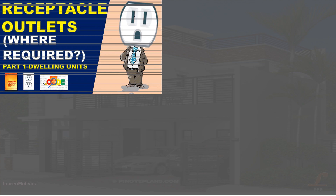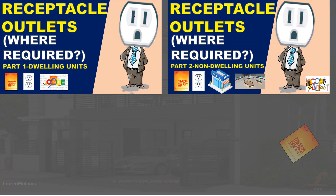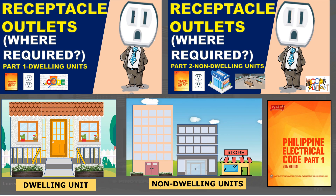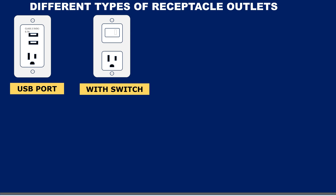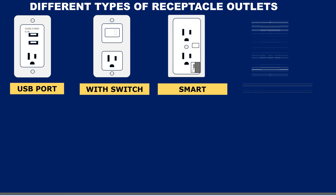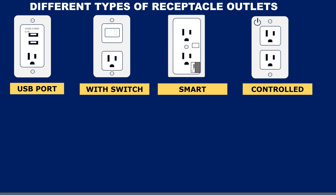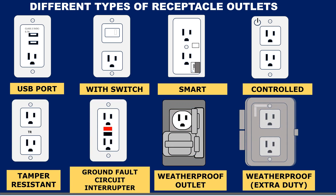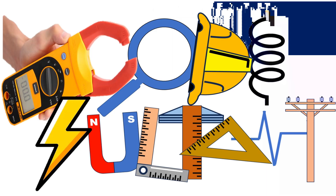In previous videos we learned where the code required an outlet and how to lay out receptacle outlets in a residential unit, hotel room, apartment, dormitory, and other similar areas. There are many types of outlets available in the market with added features like USB charging ports, a combination of switch devices, being technologically advanced with a smart outlet, and more. These features serve a special purpose and convenience. The question is: are they required by the code?